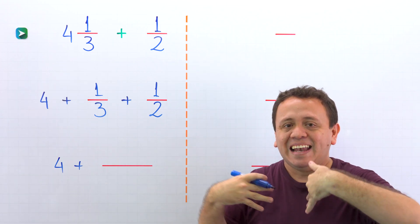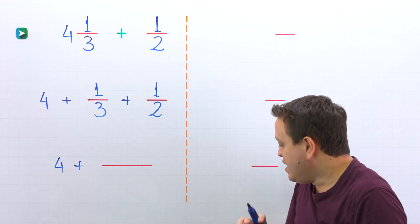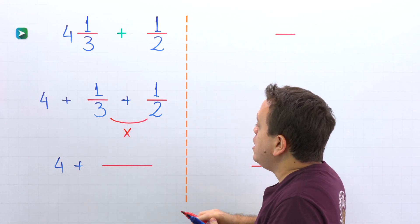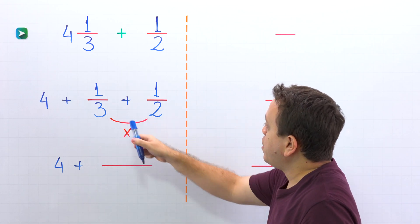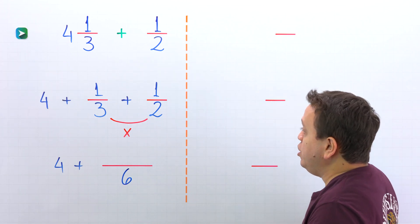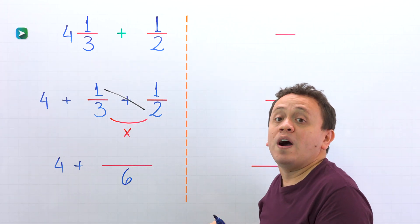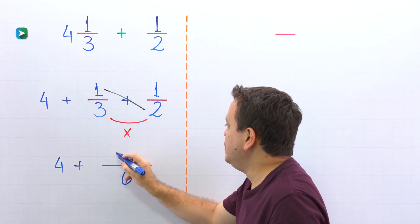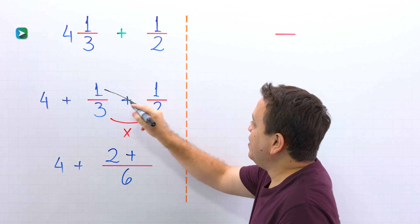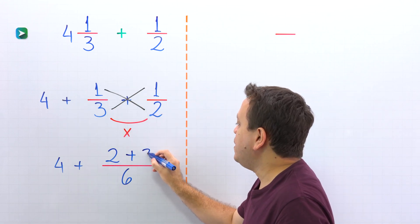There are several ways to add fractions with unlike denominators. However, I love to use the cross multiplication method, or the butterfly method. In this method, we'll start by multiplying the denominators — 3 times 2 gives us 6. And then we're going to cross multiply. On this side, we have 1 times 2, which is 2. Then comes the plus sign. On the other side, we have 3 times 1, and that gives us 3.